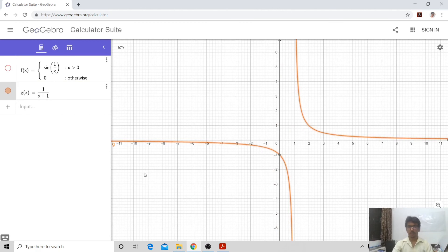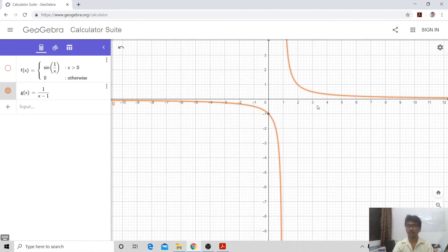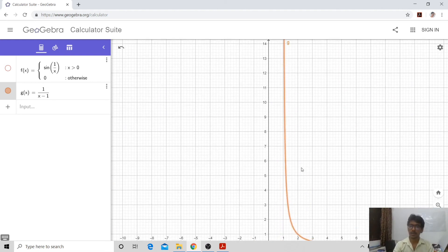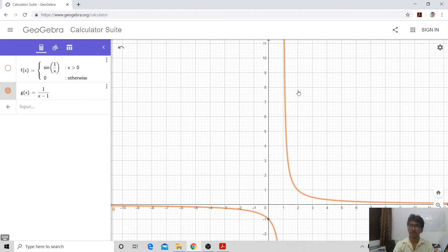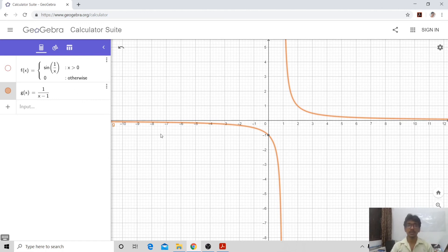See, when your x value approaches 1 from the left, it is growing in the negative direction enormously. Even though you redefine the function value at the point 1, the limit is not going to be equal to that point. Hence, in this case, we say that the function admits infinite discontinuity.